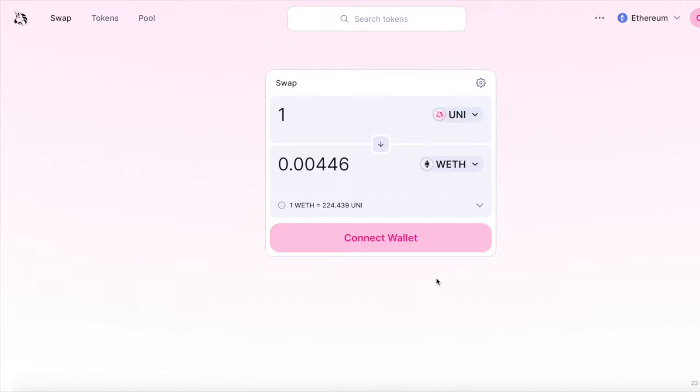Previously we did that conversion with functions, but I want to explain now with some simple napkin math why the square root ratio x96 is the same as this ratio here in the Uniswap app.